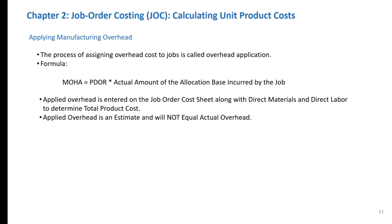Once the predetermined overhead rate has been determined, it can be used to apply manufacturing overhead to jobs. To apply manufacturing overhead, we take the predetermined overhead rate and multiply it by the actual amount of the allocation base incurred by the job. The applied overhead is entered into the job order cost sheet along with direct materials and direct labor to determine the total cost of the job. It is important to realize that the applied overhead is an estimate and will not equal the actual overhead incurred throughout the year.